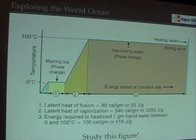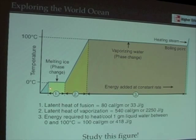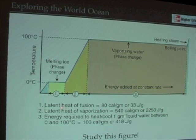Here we have the freezing point of water. Before we can begin to raise the temperature of that water, we need to add a certain amount of heat. Here we are changing the solid state of water to the liquid state. Temperature remains 0 degrees — as that ice is melting, we're adding energy but not seeing a temperature change, because we have to satisfy the latent heat of fusion. That latent heat of fusion is 80 calories per gram of water, or 33 joules per gram.